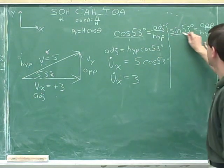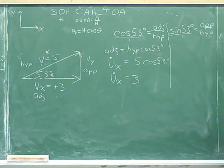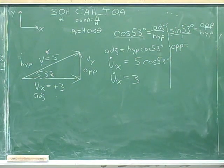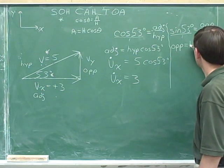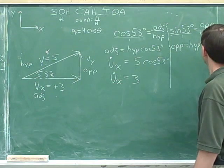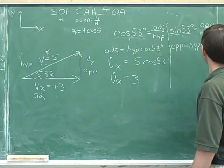Well, it would help to cross multiply to get rid of the fractions. That means multiplying diagonally. 1 times the length of the opposite side just gives you the length of the opposite side. And multiplying that diagonally in the other direction gives us the hypotenuse times the sine of 53.